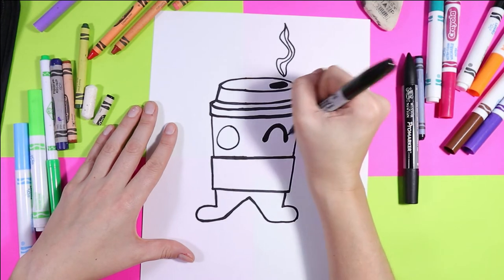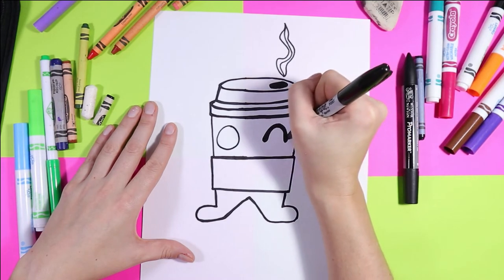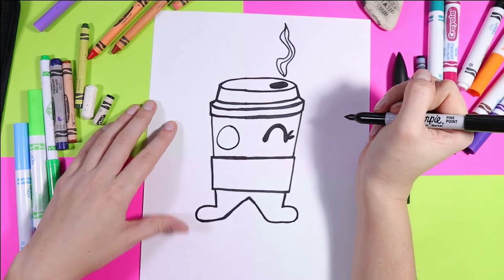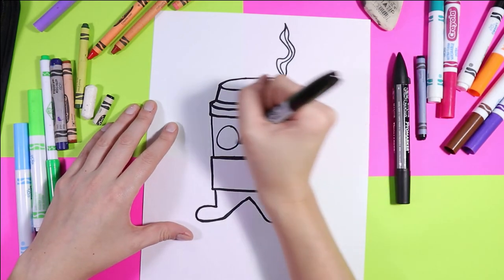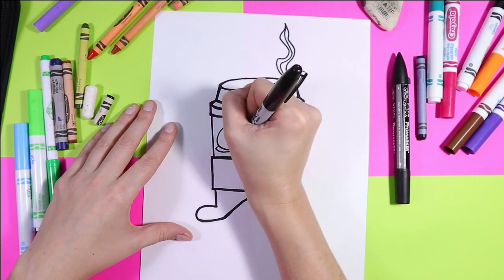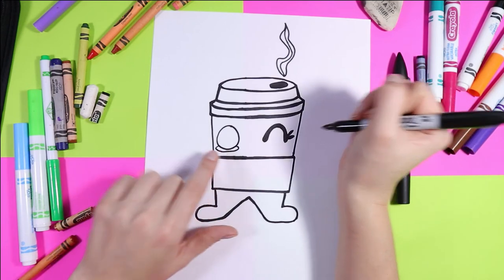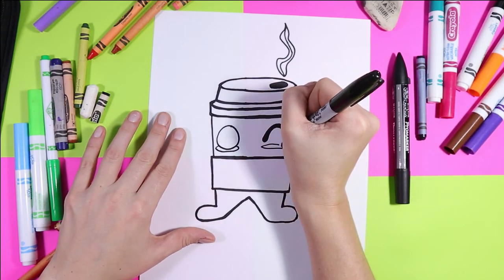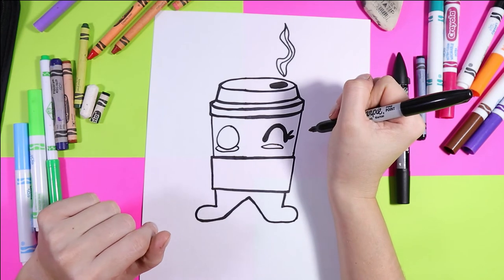So one eye is kind of winking because this is such a cute coffee cup. Okay. You can also add some lashes on it if you would like. If you don't want to, that's okay. Under this first eye, we're going to draw a half circle. And under the second one, a full oval.